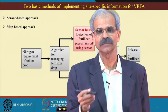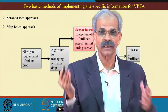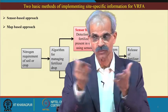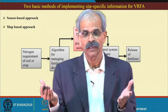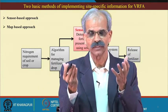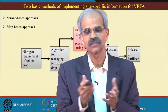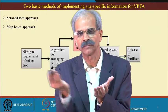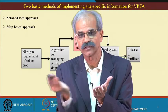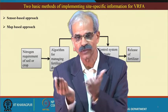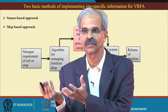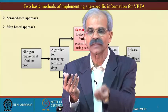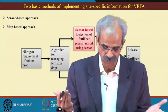Another method is the map-based approach: we map the whole field and find out what is the content of nutrients at various locations. We create a map of that, and using advanced technology such as MATLAB and other software, we store this information. When we go to that location, the sensor identifies it and we can apply the required amount accordingly.